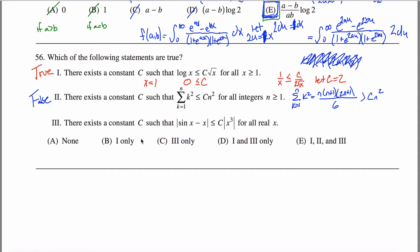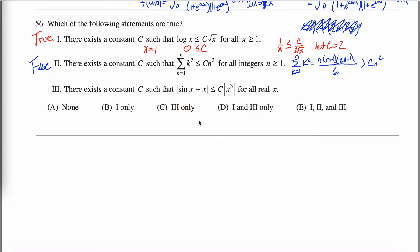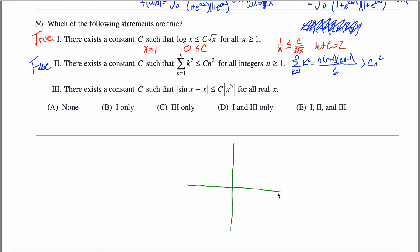What about the third statement? There exists a constant c such that — this is the most interesting of the three. We're looking at the absolute value of sine of x minus x. Sine of x is an odd function, and x is also an odd function, and the difference of odd functions is also odd.